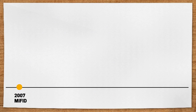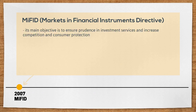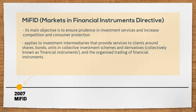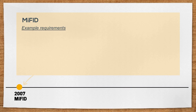In 2007, MiFID was implemented across the EU as one of the cornerstones of EU financial services legislation. Its main objective is to ensure prudence in investment banking services and increase competition and consumer protection. It applies to investment intermediaries providing services to clients around shares, bonds, units in collective investment schemes, derivatives, and the organized trading of financial instruments. It prescribes which instruments, services, and activities are regulated, and spells out the governance of investment firms to protect the interest of their clients. It also sets a framework for trading infrastructure.